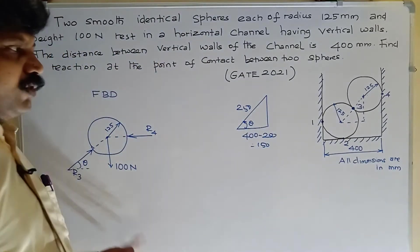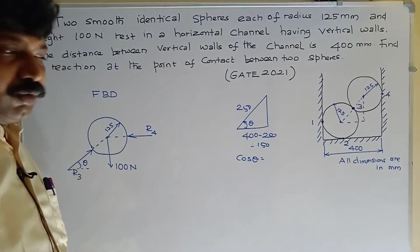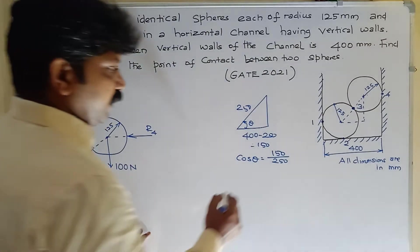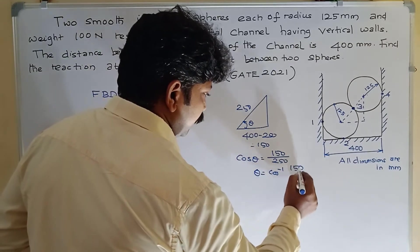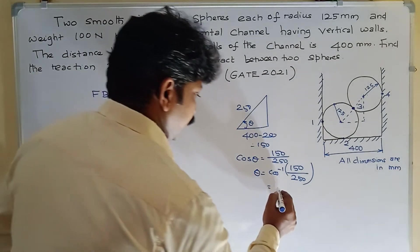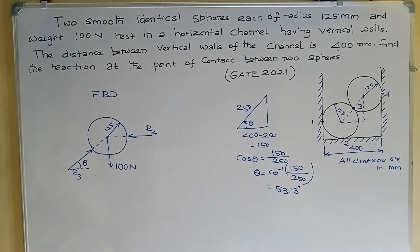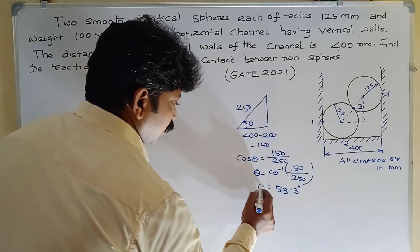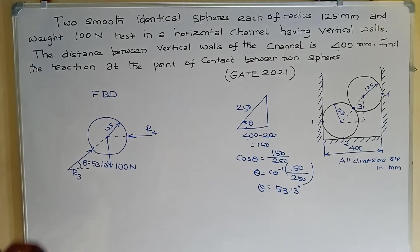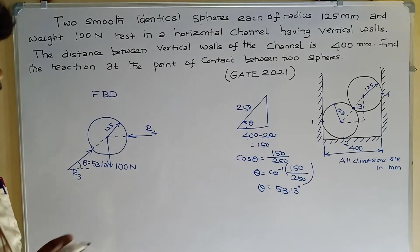So cos theta equals 150 divided by 250, giving theta equal to 53.13 degrees. Now substitute the value theta = 53.13 degrees. The sphere is in equilibrium, resting in the channel.